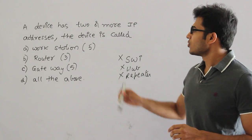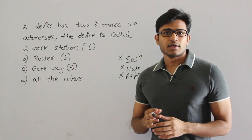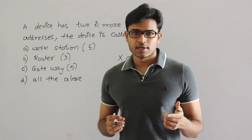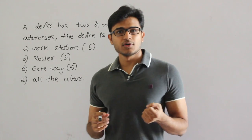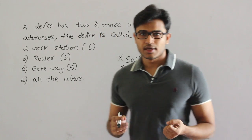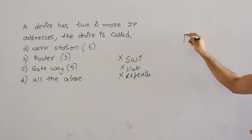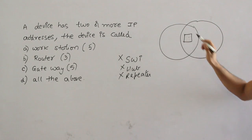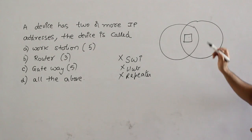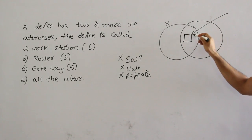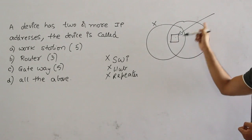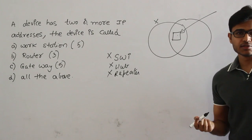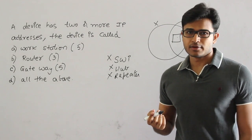A host is nothing but your computer, an end user. An end user can configure more than one IP address to his computer. Why would a host go for more than one IP address? Getting more than one IP address is nothing but being present in more than one network. If you take two IP addresses from two ISPs, you are present in two networks. Even if one network is down, you could be reached from the other network. That is the reason generally people will go for more than one IP address.